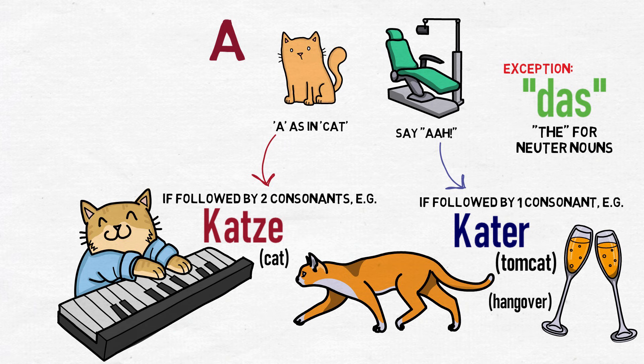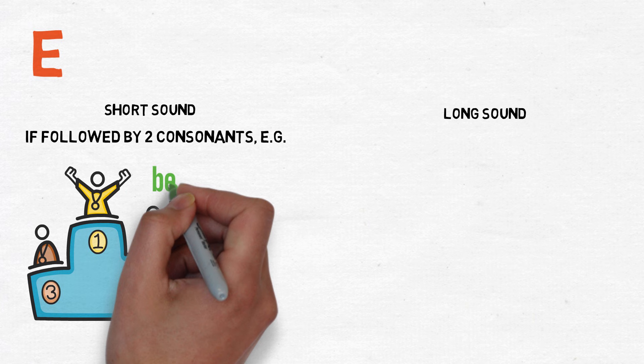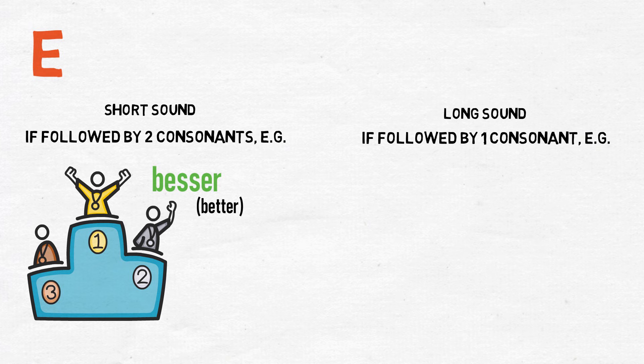The E letter occurs in most German words and has a similar long and short sound, with the short sound being E and the long sound being E. The same rule applies: if followed by two consonants, it will be short — as in besser, meaning better. With the long sound occurring if there is one consonant, such as the word for 'he', er, or one of the words for 'the', der.